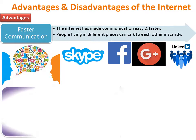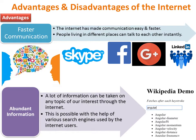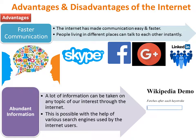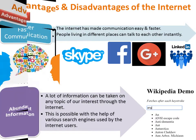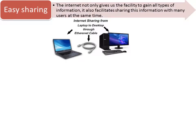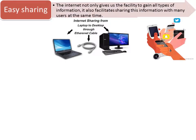Abundant Information: A lot of information can be taken on any topic of our interest through the internet. This is possible with the help of various search engines used by the internet users. Easy Sharing: The internet not only gives us the facility to gain all types of information, it also facilitates sharing this information with many users at the same time.